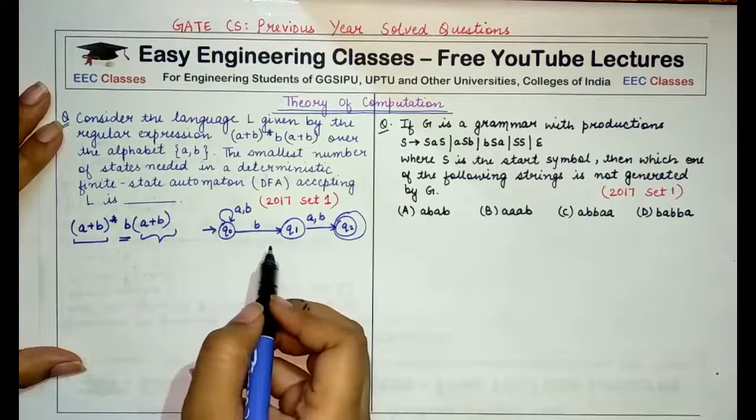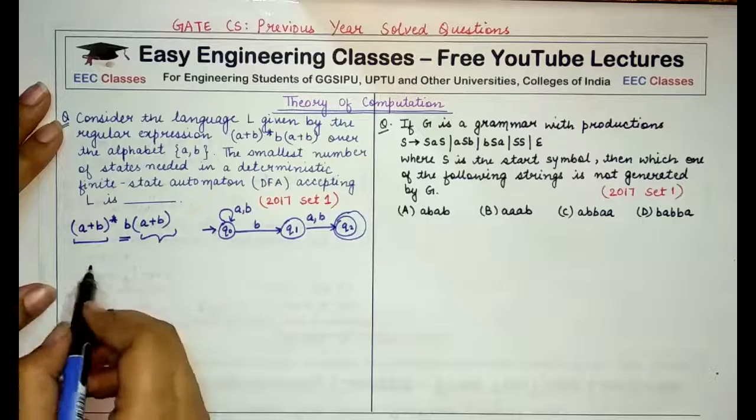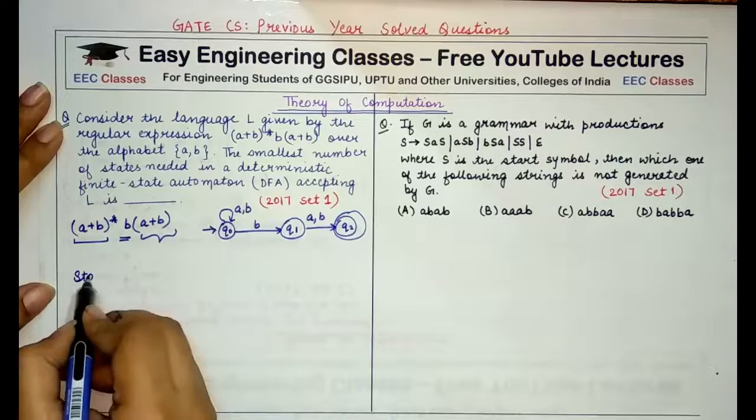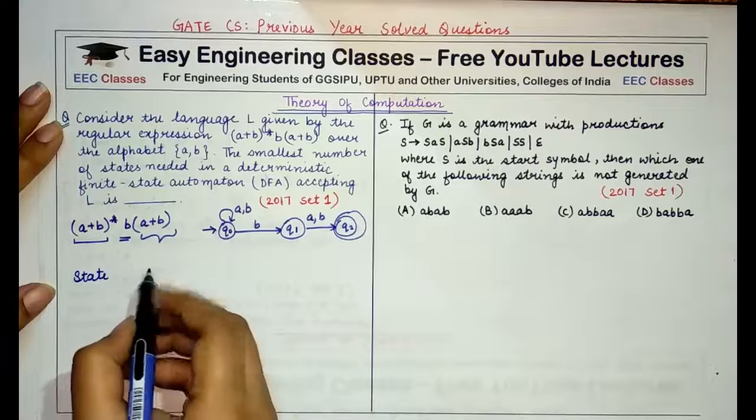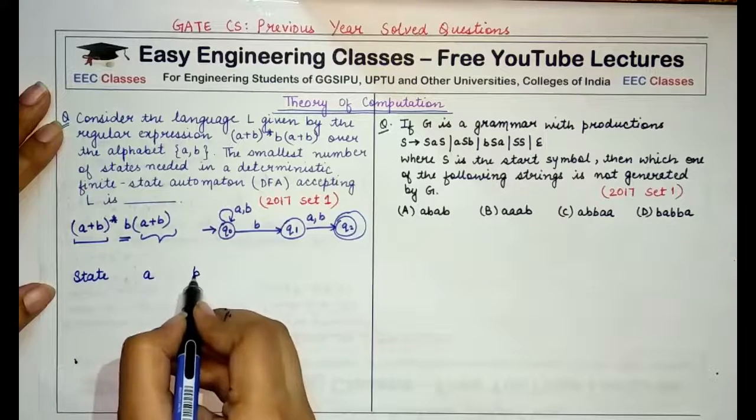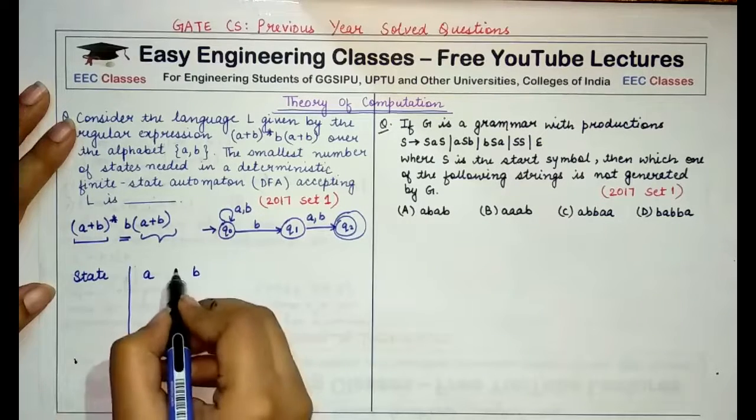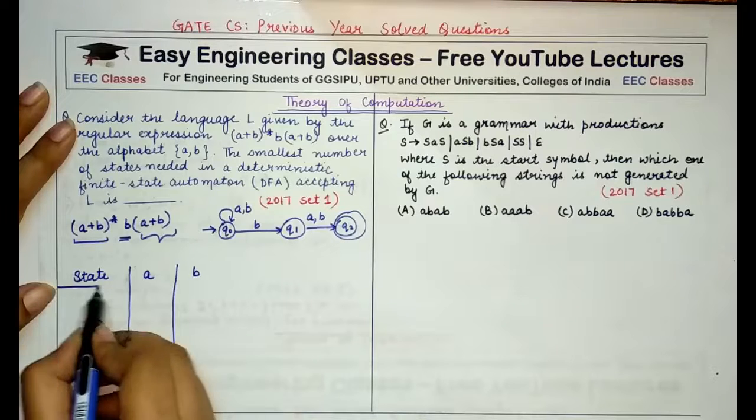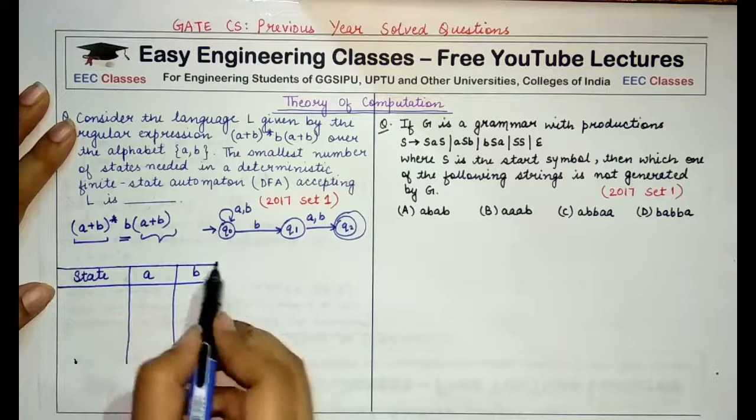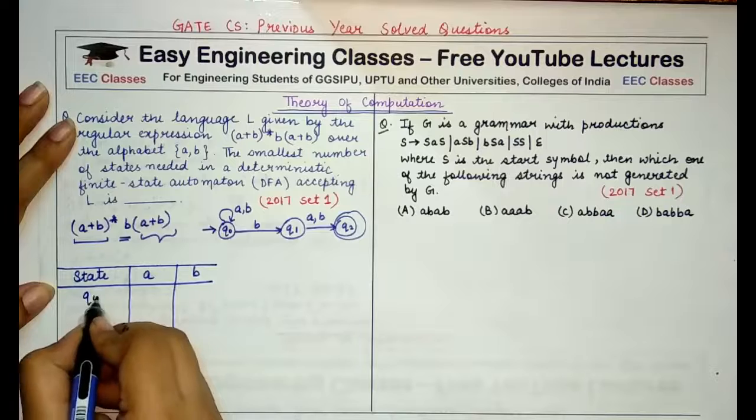Now if I have to convert it into a DFA, I have to draw a table in which I write down the state and the transitions for a and b.